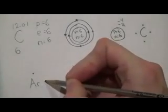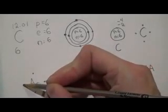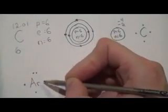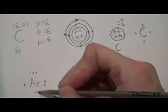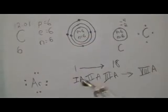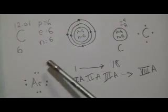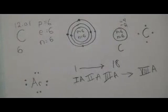would look like this. 1, 2, 3, 4, 5, 6, 7, 8. If you're in my class, remember, this is how I want you to draw your Lewis dot diagrams.